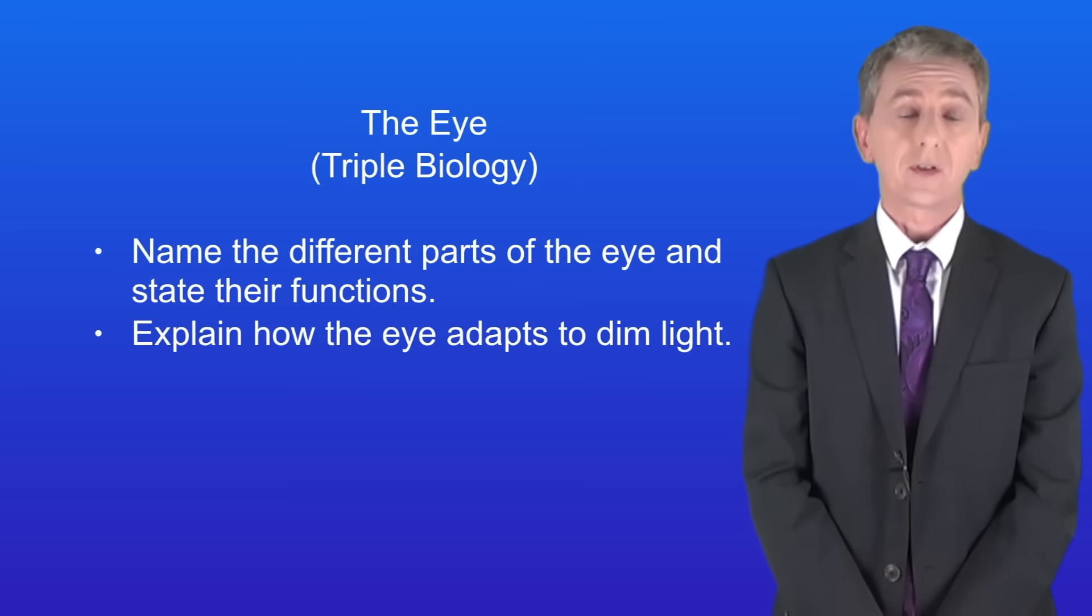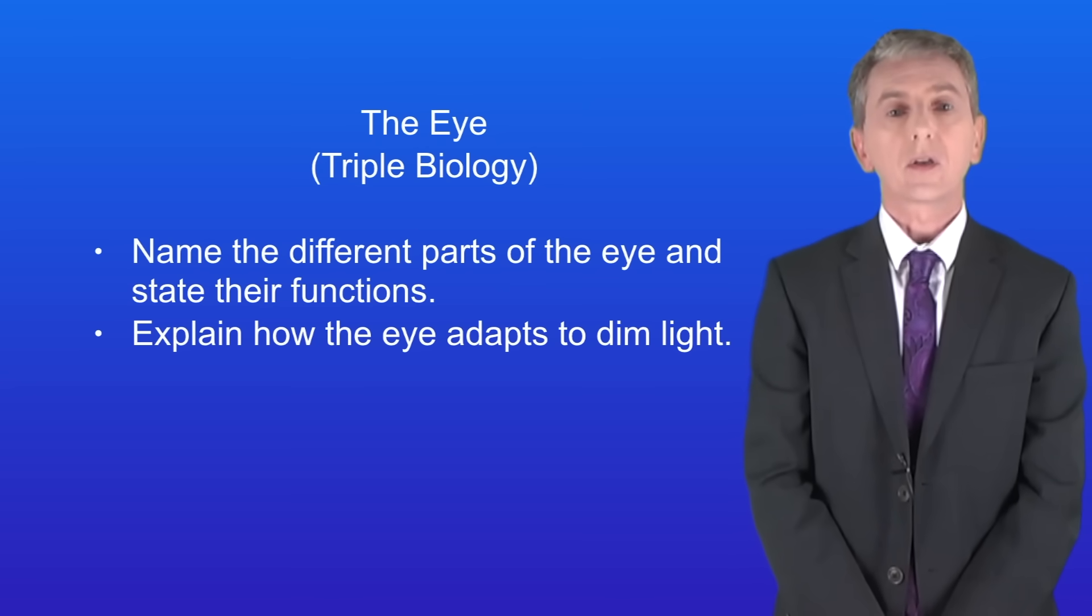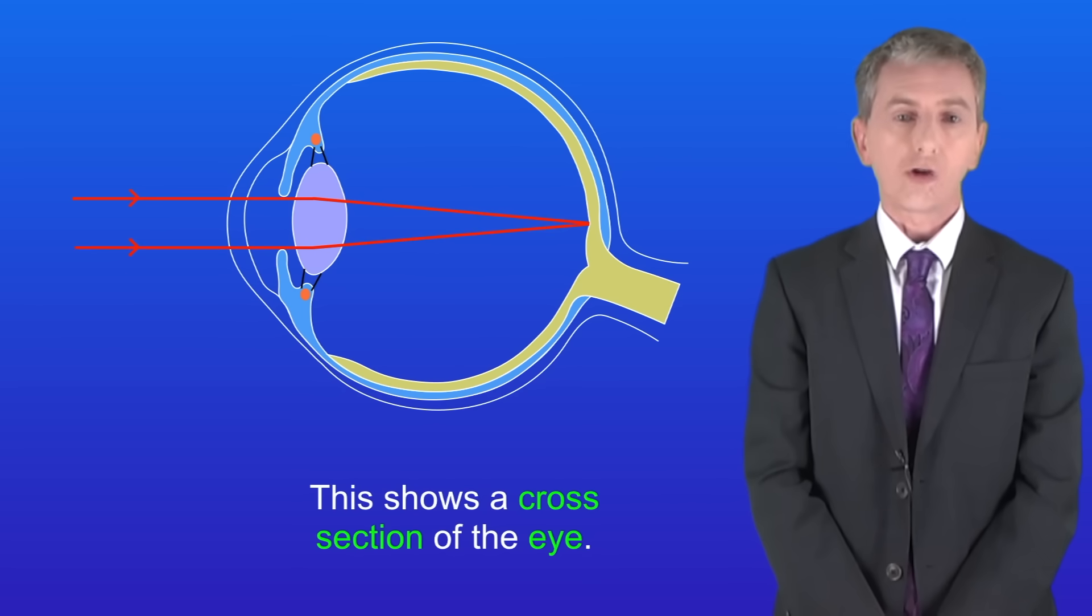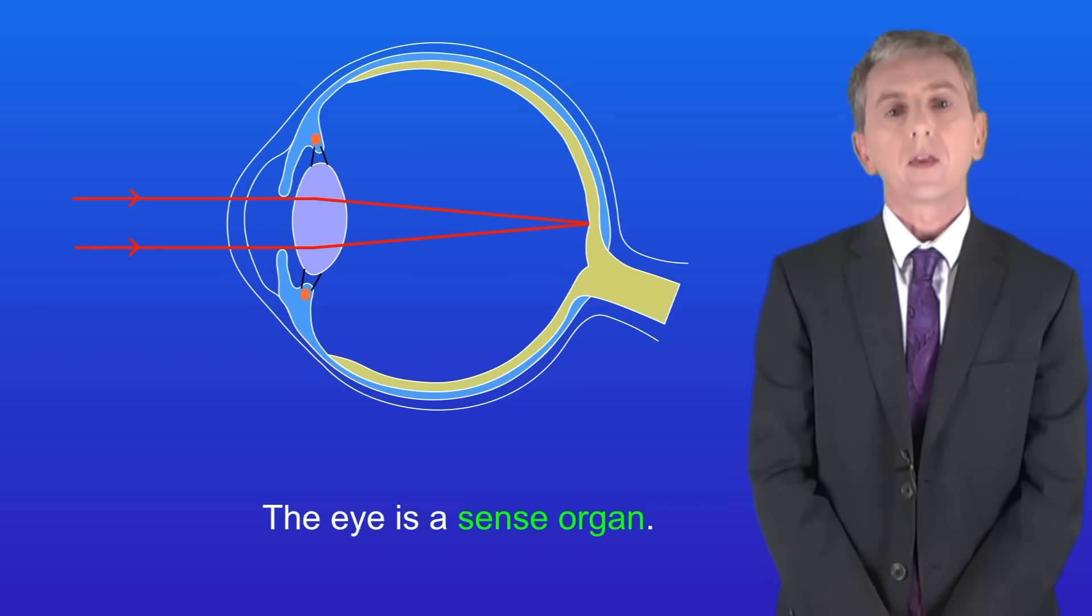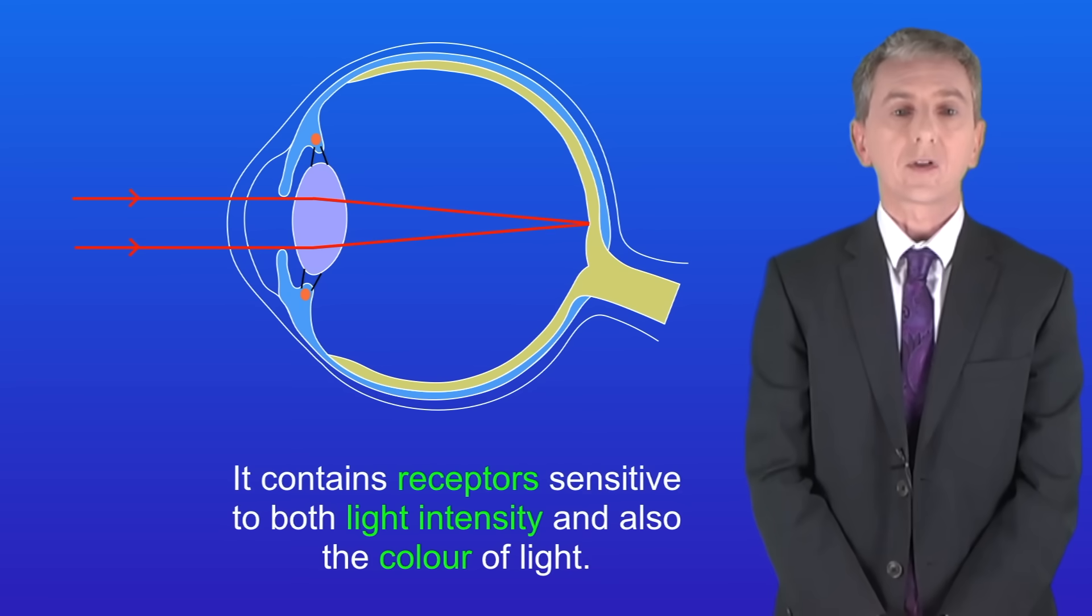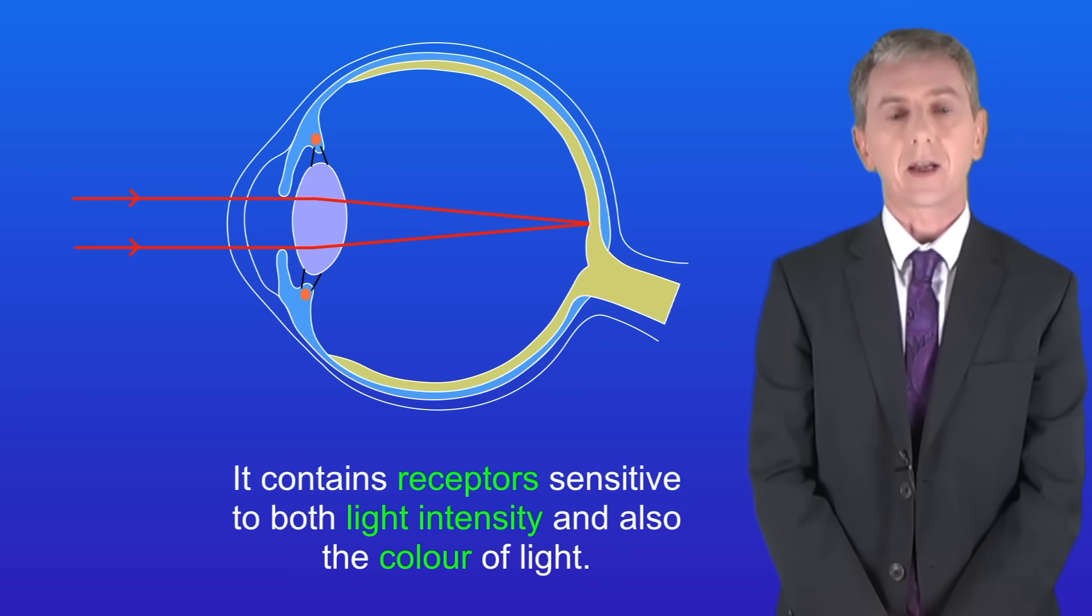Now I should point out there's a lot of detail in this video but it's really worth learning as it's a common exam question. I'm showing you a cross section of the eye here. The eye is a sense organ and it contains receptors sensitive to both light intensity and also the colour of light.